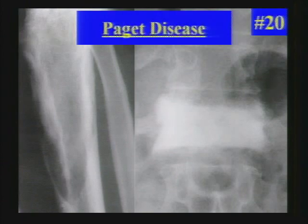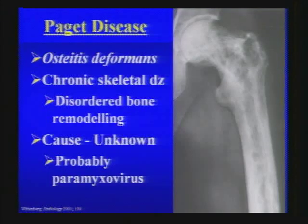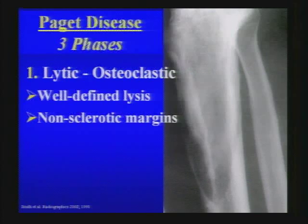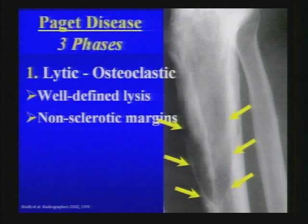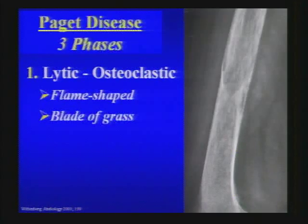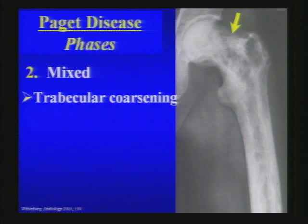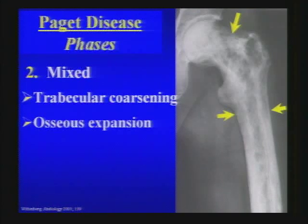Two patients with the same diagnosis: Paget's disease, also referred to as osteitis deformans — a chronic skeletal disease characterized by disordered bone remodeling, probably due to a paramyxovirus in genetically susceptible patients. There are three phases: the lytic or osteoclastic phase, with well-defined osteolysis and non-sclerotic margins that march down the bone about 1 cm per year, creating a flame-shaped or blade-of-grass appearance. The mixed phase is characterized by trabecular coarsening, osseous expansion, and cortical thickening.